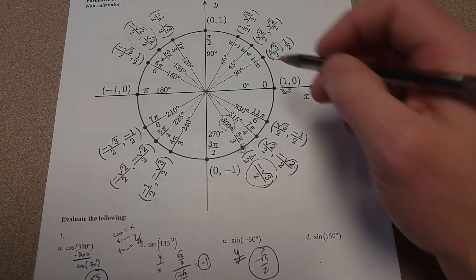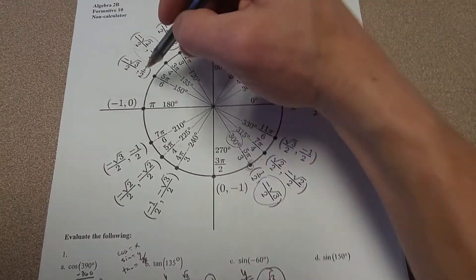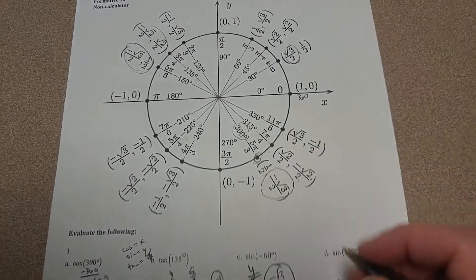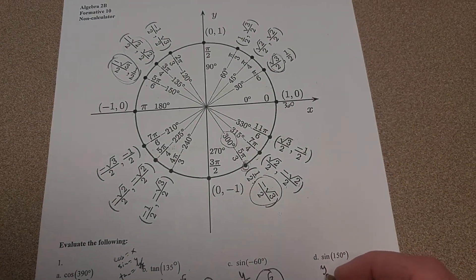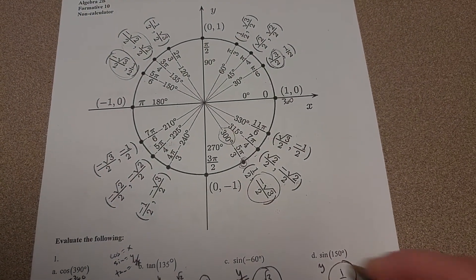And then the sine of 150, so 150 is right here, so we're looking at this ordered pair. Remember sine, again, is the Y coordinate, so the Y coordinate there is positive 1 half.